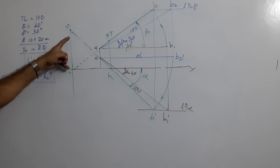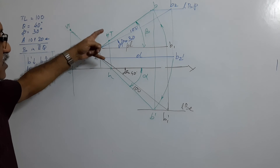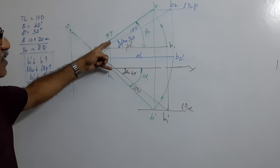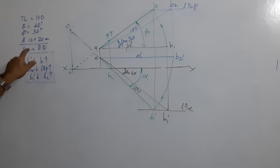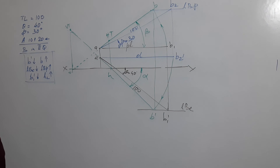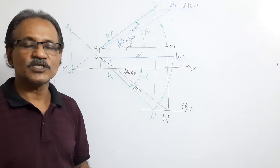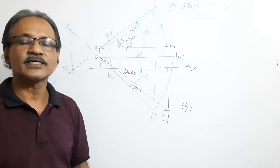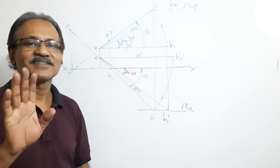VT is such-and-such distance above HP and HT is such-and-such distance behind — that is the end, B in the third quarter. I hope you understood. If you are happy with the presentation and the channel, please subscribe. Thank you.